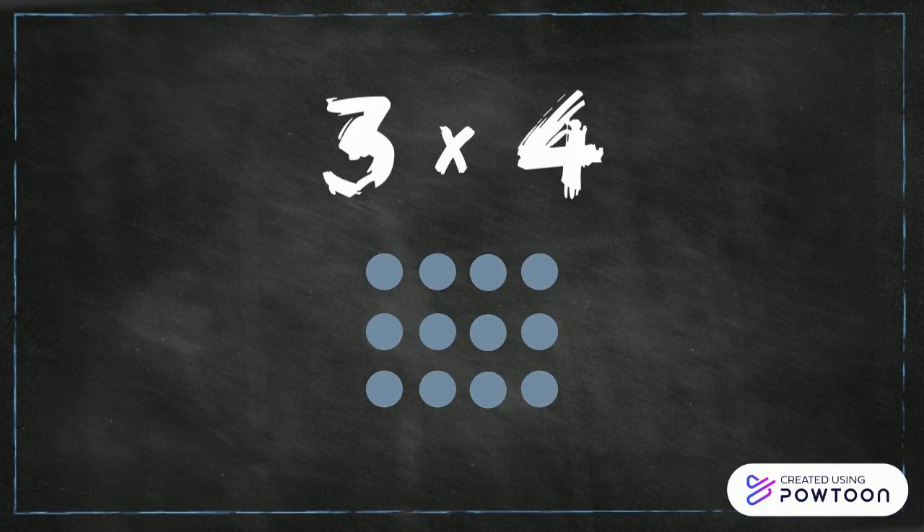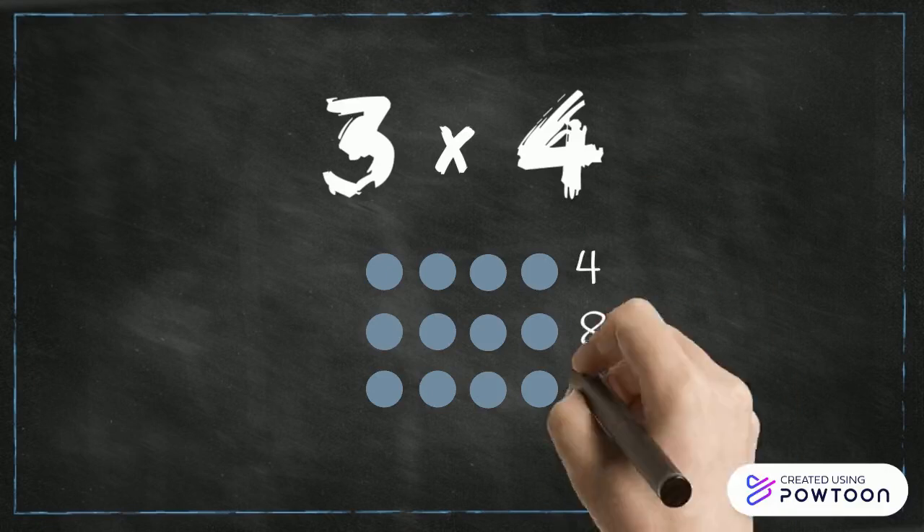Now let's count up all the dots in each row to find the product of our two factors. It's helpful to record the amount in each row as you count to avoid making a mistake. One, two, three, four, five, six, seven, eight, nine, ten, eleven, twelve. Twelve is our product.